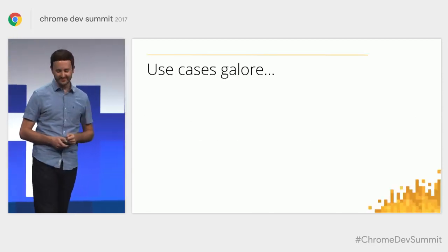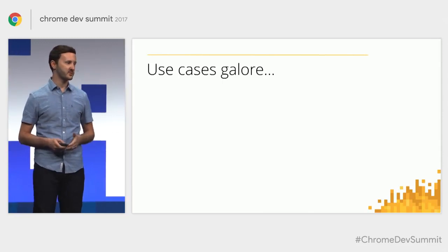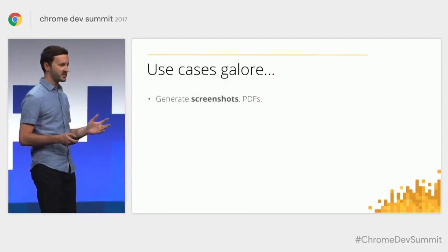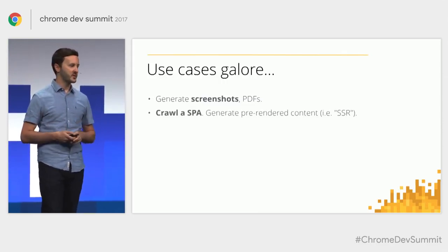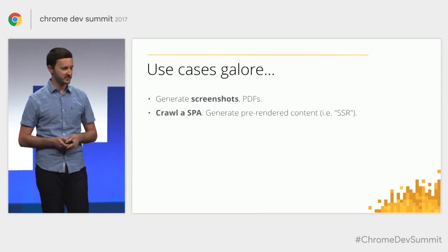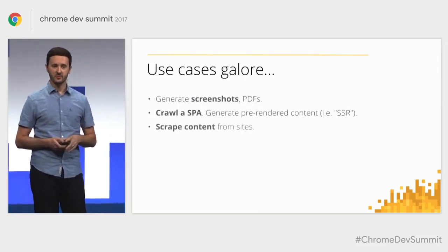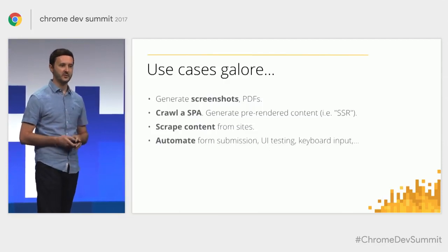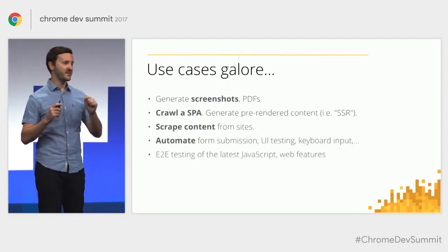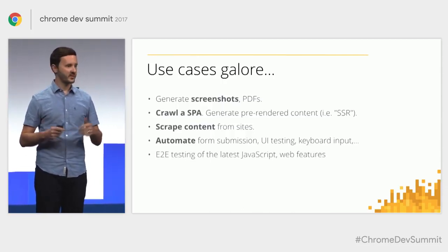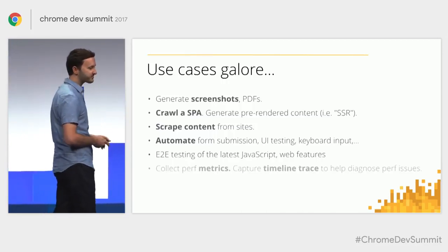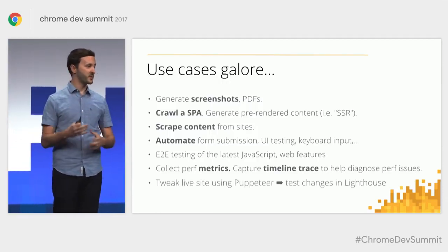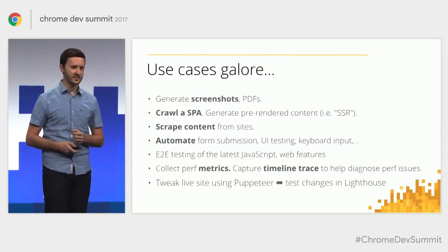There are actually really interesting use cases with headless browsing libraries like Puppeteer — it's not just about testing. You can generate screenshots, create PDFs. Maybe you want to crawl your single-page application and render it server-side in the cloud for SEO purposes. You can scrape content from sites. Maybe you just want to interact with a page — automate form submission, test your accessibility or keyboard handling. I'm excited about end-to-end testing with the latest JavaScript and web platform features, so you can test Service Worker — really handy if you're building a PWA. Collect page metrics programmatically, or use Puppeteer to change a page and then run it through Lighthouse to see how those changes affect performance.